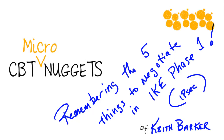Remembering the five things to negotiate in IKE Phase 1. For an IPsec tunnel there are five specific things that need to be negotiated and agreed to before the IPsec tunnel build can continue. In this micro nugget I'm going to give you a very easy and fun way to remember each of those five items.